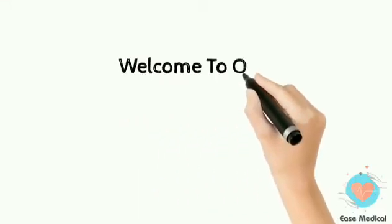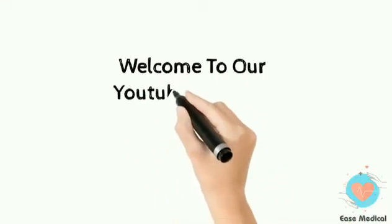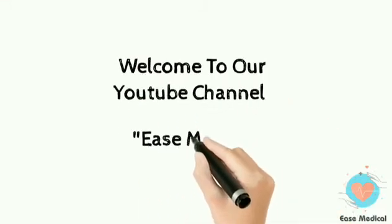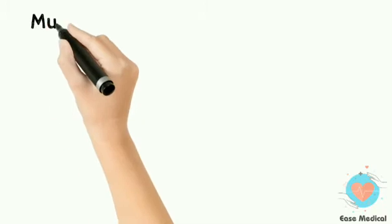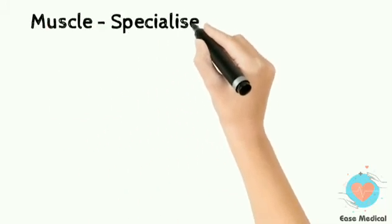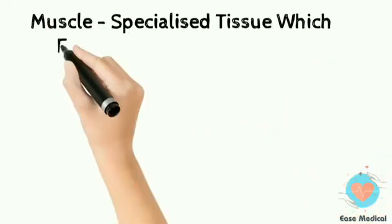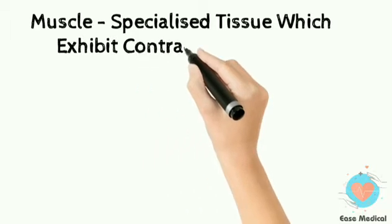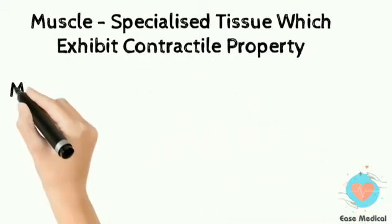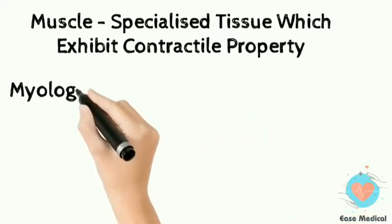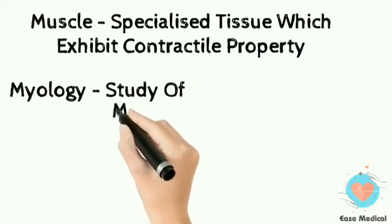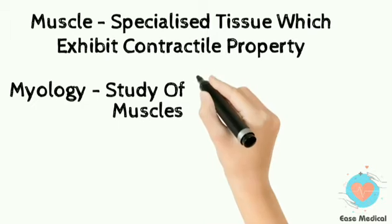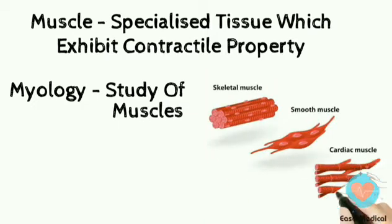Welcome to our YouTube channel. In this tutorial you are going to learn about myology. A muscle is a specialized tissue which exhibits contractile property. Myology is basically the study of muscles. There are three types of muscles: skeletal muscle, smooth muscle, and cardiac muscle.